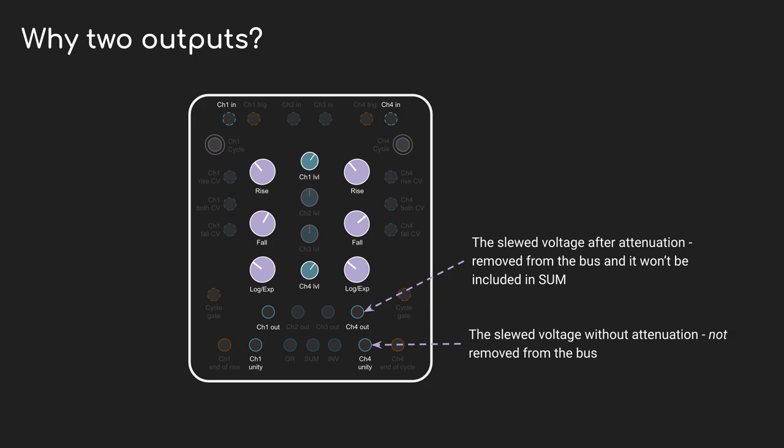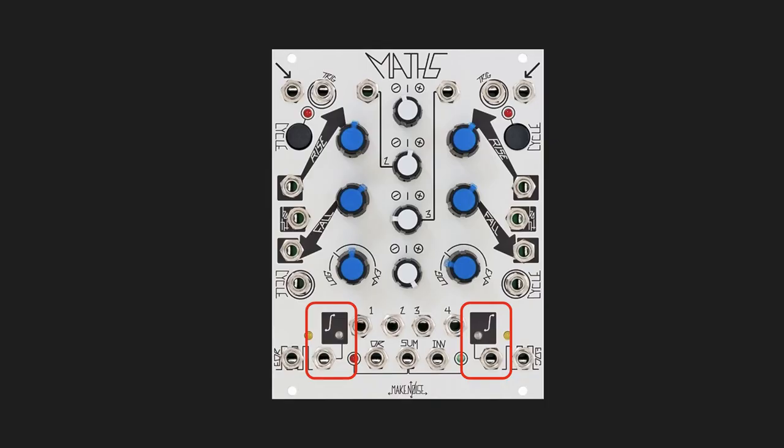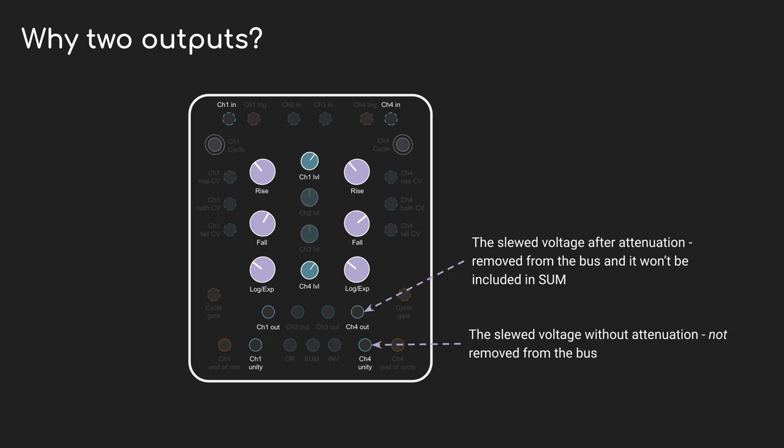I want to quickly come back to the whole thing about two outputs. In addition to the regular output for channels 1 and 4, where the attenuverter is applied, there's also a unity output, marked with what looks like a little integration symbol. On my diagrams I just write 'unity' for clarity. So if you have a gate that goes from 0 to 5 volts, the unity output will stay at 0 to 5 volts. But if you had the attenuverter turned all the way to the left, the regular output would show the voltage sweeping from 0 volts down to minus 5. If you take the regular output, it actually removes that voltage from the summing bus. The unity outputs don't work that way, so you can use them without affecting the sum.